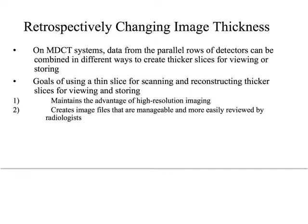We can also retrospectively change slice thickness, which we do pretty frequently if we want to minimize the amount of data sent to a radiologist, since they have to interpret every image we give them. Scanning at a smaller slice thickness can produce images with better spatial resolution, but then the radiologist has to interpret every single tiny slice-incremented image. It's better to combine two or three of those slices into a single image — we'll have the enhanced detail but not the enhanced data overload.